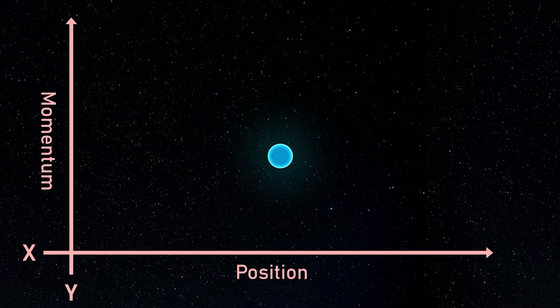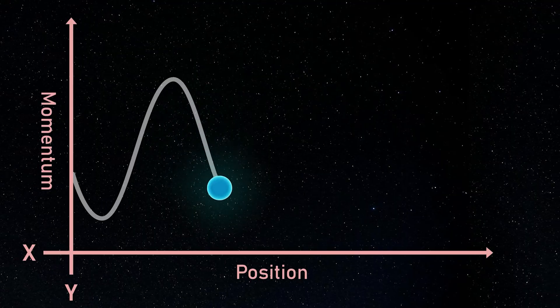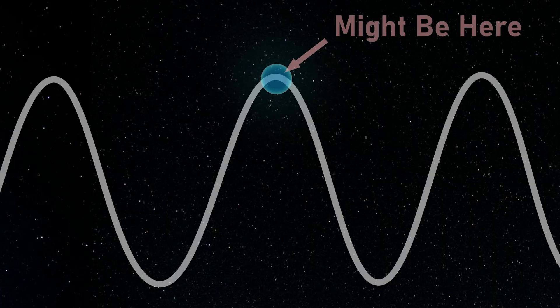Explain it. According to the uncertainty principle, we can't know a quantum particle's position and momentum at once. Instead, we use a probability wave, showing where the particle might be.